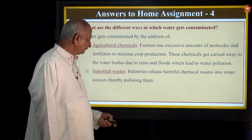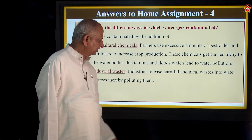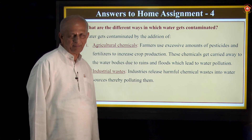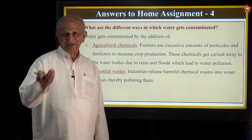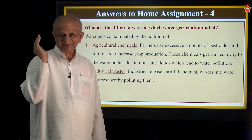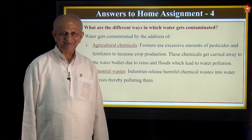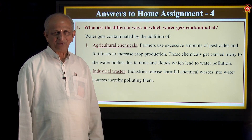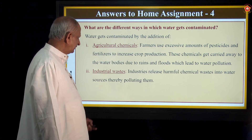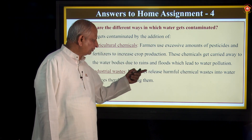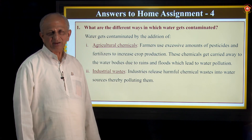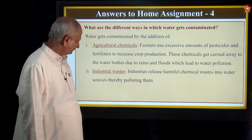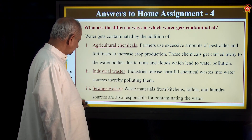Secondly, industrial waste. Industries release harmful chemical waste into water sources, thereby polluting them. Industry means a large factory — both mean the same. In production of certain materials, chemical waste is inevitably released into rivers or water bodies, which pollutes them. Sewage waste — waste materials from kitchens, toilets, and laundry resources — are also responsible for contaminating water.